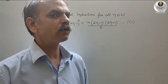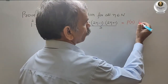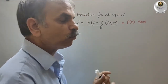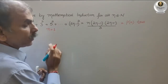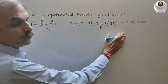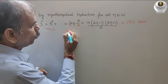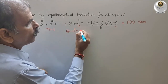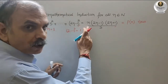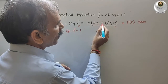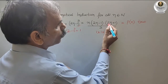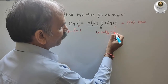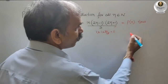We have to prove that P(n) is true. For that, we take n = 1 and substitute this value. We get (2×1 − 1)² = 1² = 1 on the LHS. On the RHS, substituting n = 1: 1×(2−1)×(2+1)/3 = 1×1×3/3 = 1. LHS equals RHS, therefore P(1) is true.